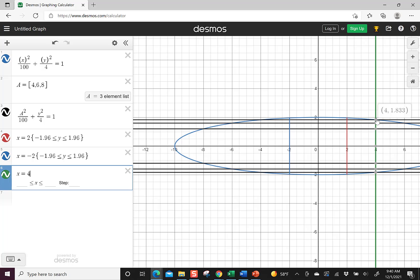And you want to look up here at the top one, it's 1.83. So those would be my conditions. I would say negative 1.833 is less than or equal to y, which is less than or equal to 1.833.